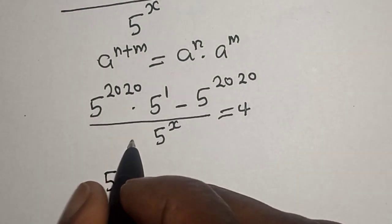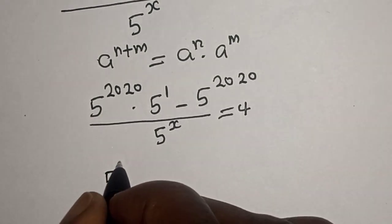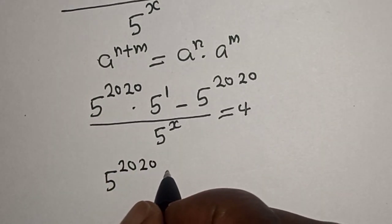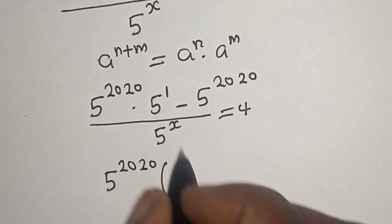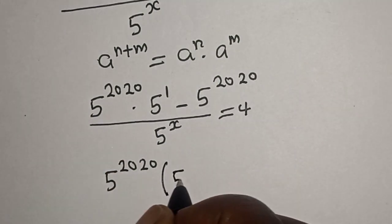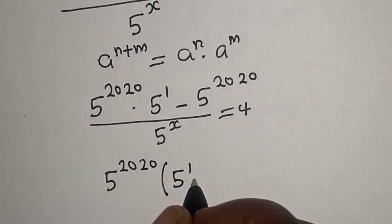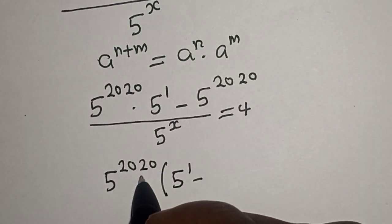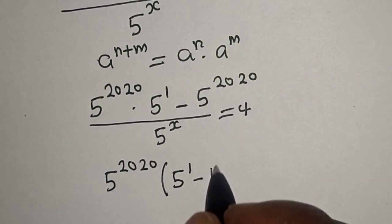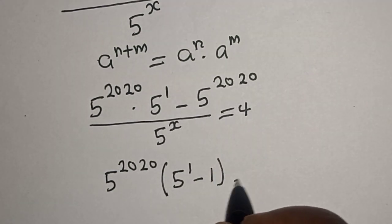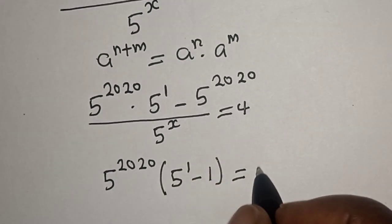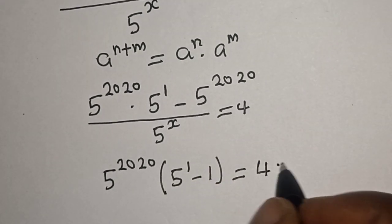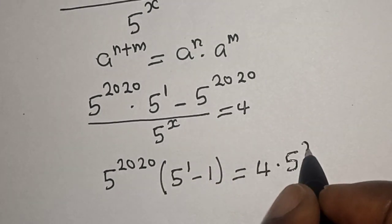We can factor out 5 raised to power 2020 from the numerator. That gives us 5 raised to power 2020, multiplied by the quantity 5 minus 1, divided by 5 raised to power s, is equal to 4. That is 5 raised to power 2020 multiplied by 4, divided by 5 raised to power s, is equal to 4.